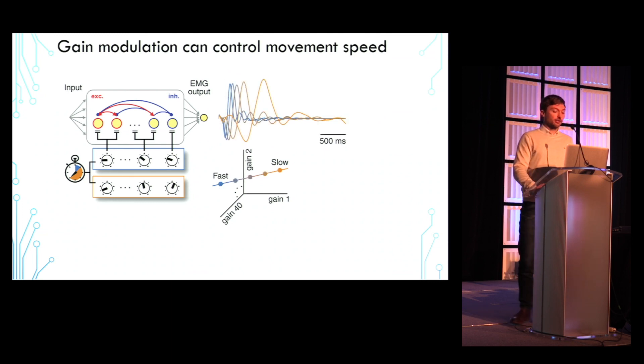Here I'm now plotting the same movement at five different points along the gain manifold, and we can see that the movement is fairly accurately reproduced at the different speeds.